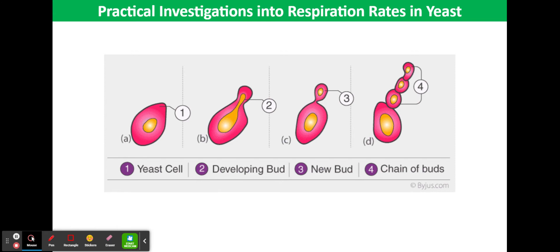Yeast is a facultative anaerobe. It is a single-celled fungus and is eukaryotic. Its cells contain mitochondria. Yeast cells may reproduce asexually by dividing by mitosis.